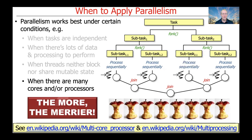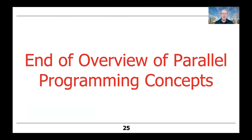The fourth condition under which parallelism works best is when there are many cores and/or processors — the more, the merrier. If you have dozens of cores, your embarrassingly parallel processing tasks will run better than if you only have one core or a handful of cores. And that's the end of our overview of parallel programming concepts.